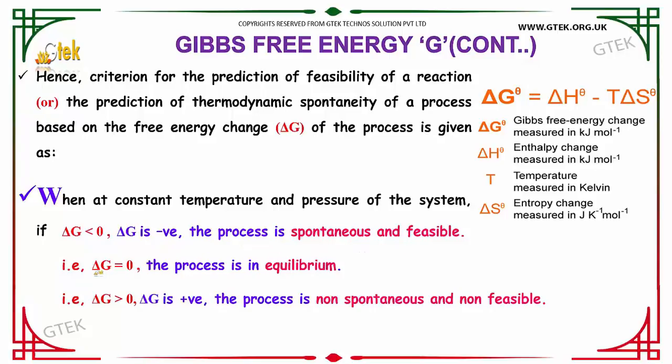Delta G equal to zero means the process is in equilibrium. And delta G greater than zero, meaning delta G is positive, means the process is non-spontaneous and non-feasible.